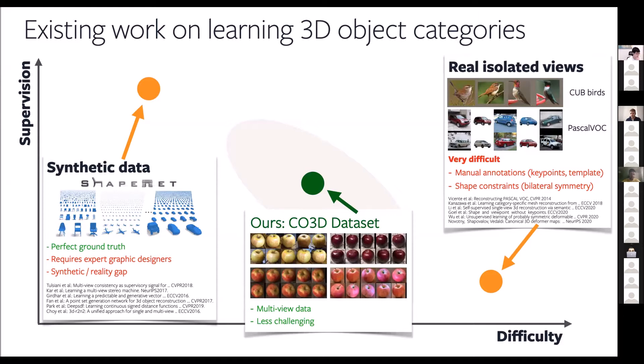This is essentially where we enter the field. Our main proposal is a novel dataset called Common Objects in 3D, which is a dataset of real views of object categories. Importantly, this dataset contains multiple views of the same instance of a given object category. This way, the problem becomes much less challenging because we can enforce multi-view consistency constraints between individual views of instances of the object category, and hopefully obtain much better results during category-centric novel view synthesis.